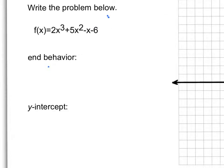Okay, so here's our first problem. f(x) is equal to 2x cubed plus 5x squared minus x minus 6. The first thing we want to look at is end behavior. So we're going to look at our leading coefficient and our degree. So what's the highest degree? 3, good.